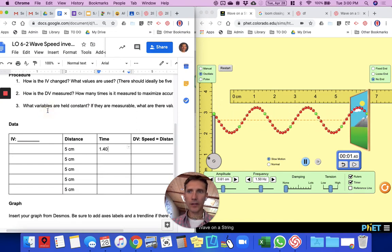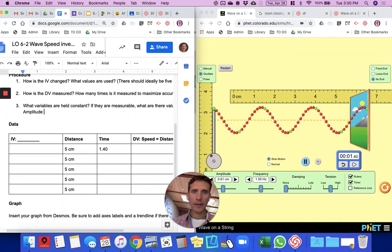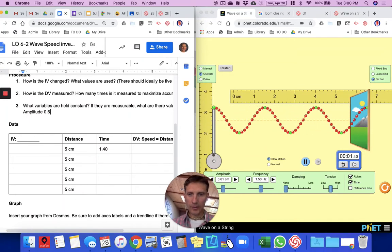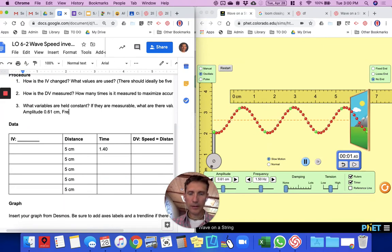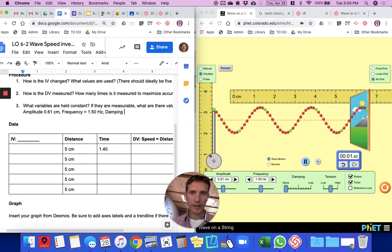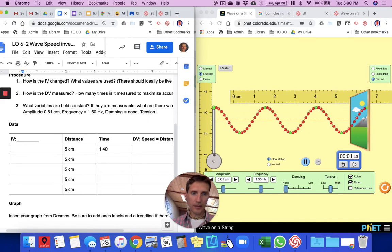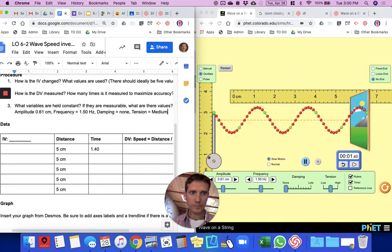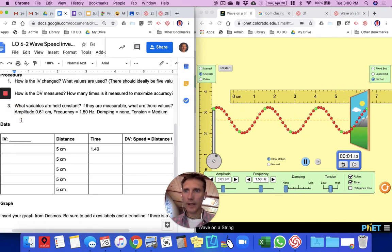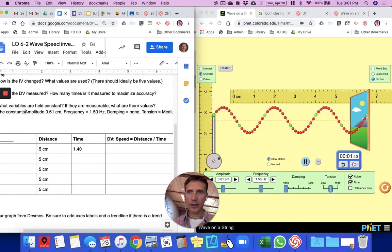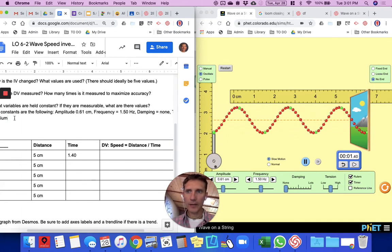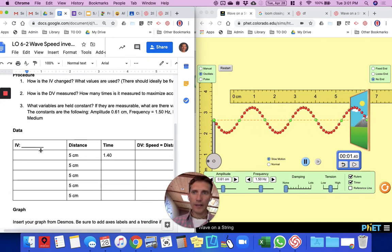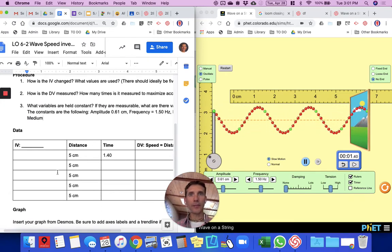I should talk about what my constants are. Amplitude equals 0.61 centimeters, and I'm just taking that number from here. Frequency equals 1.50 hertz. Damping is set to none, and tension is set to medium. I should respond with this as a complete sentence: the constants are the following. So I've identified my constants, and I don't need to include them in the data table because they're already described in my procedure.